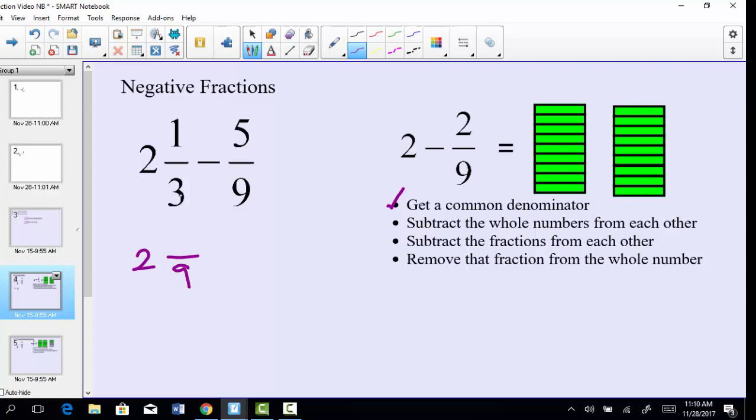So we have to say to ourselves, what did we do to 3 to change it to a 9? Multiplied times 3. But if we do it to the bottom, we have to do it to the top. So 2 and 1/3 has been renamed as 2 and 3/9 minus 5/9.